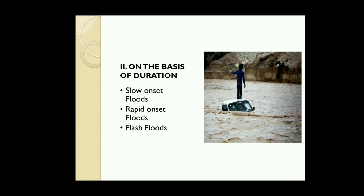On the basis of duration, floods are divided into three categories. First, slow onset flood: it spreads over many kilometers and lasts for a longer period — one week or more. Second, rapid onset flood: it occurs within two days and causes much damage. Third, flash flood: it occurs within minutes to a few hours, can be caused by cloudburst, landslide, and dam failures, and the damage caused by it is the severest.